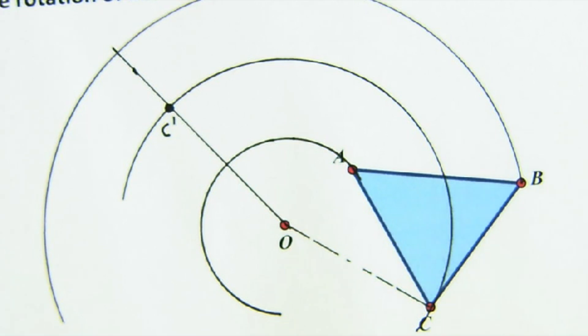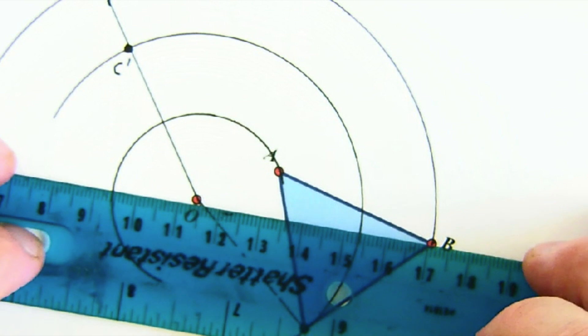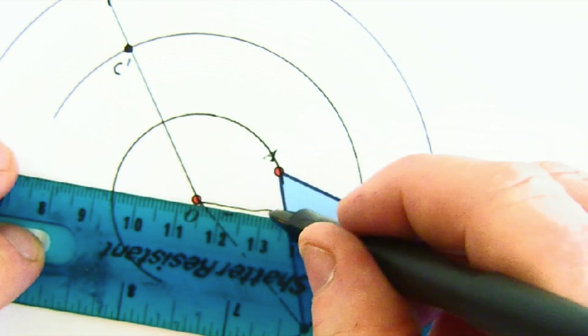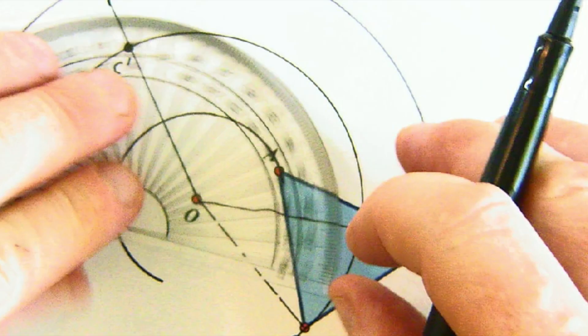Now we just need to do that three times. Let's do that with B now. So let's create an initial arm for B of our angle. It's got to go 100—oops, got a little bump there.